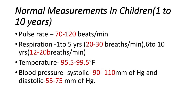The normal temperature for children is 95.5 to 99.5 degrees Fahrenheit. The blood pressure has ranges: the systolic range is 90 to 120 mm of Hg, and the diastolic range is between 55 to 75 mm of Hg.